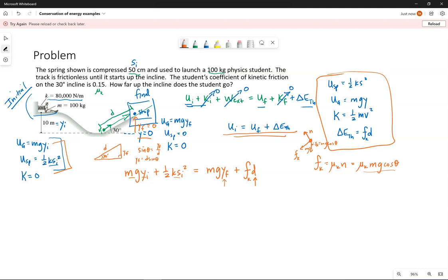We need to make that substitution for y final before we can solve because we currently have two unknowns in our conservation of energy equation. So let me go ahead and write that out.